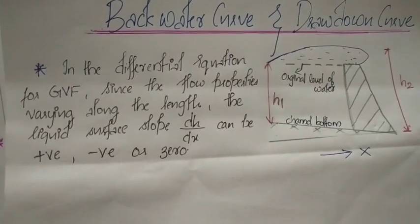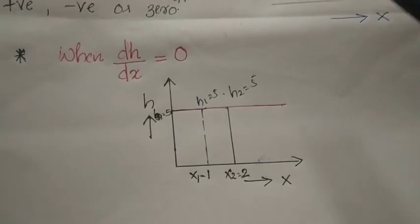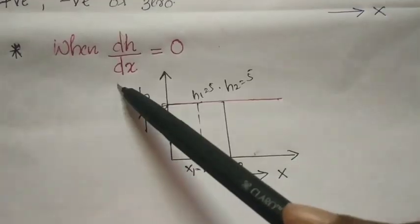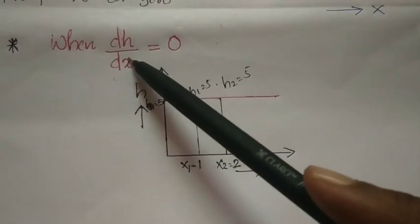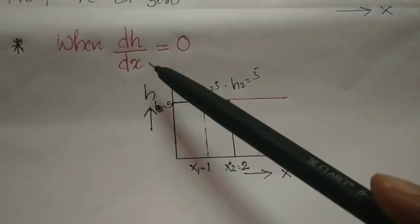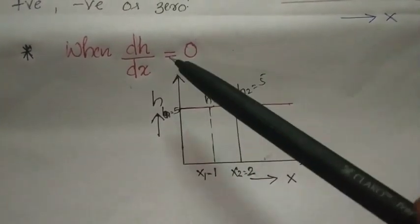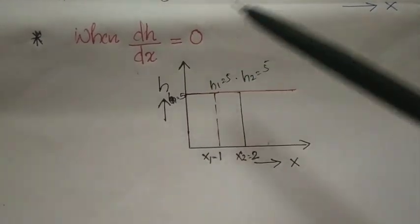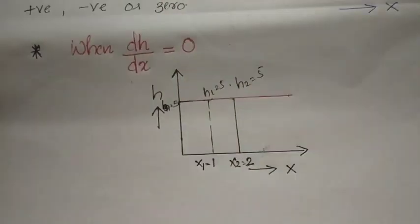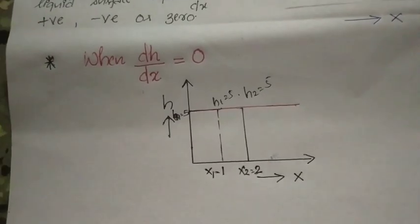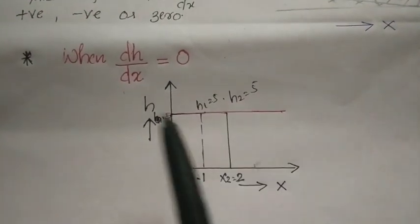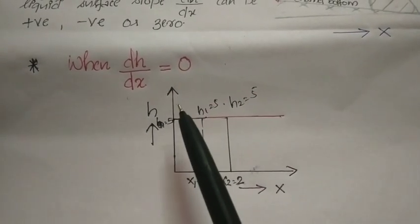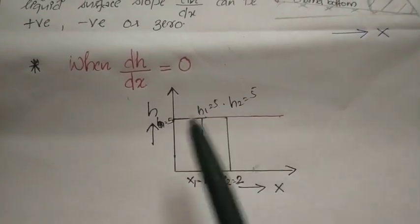First case: when dh/dx is equal to zero. Here, dh/dx represents the change in height of water with respect to unit change in distance. When dh/dx equals zero, h is constant, meaning the depth of the liquid surface above the bottom of the channel is constant.